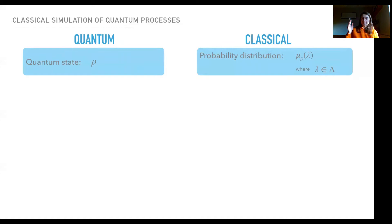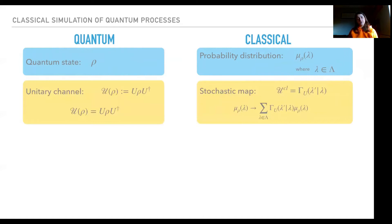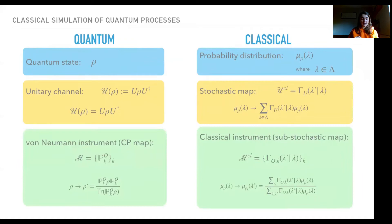This means we can have a dictionary mapping the quantum world to the classical world. In the quantum version, we have the quantum state given by rho. In the classical version, we have a probability distribution mu_rho(lambda), where lambda is an internal state belonging to the state space Lambda. For transformations, we have unitary channels in the quantum version and stochastic maps in the classical version. For measurements, we have non-demolition instruments (CPTP maps) in the quantum version and sub-stochastic maps in the classical version.